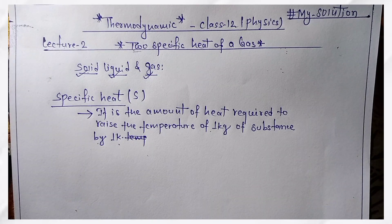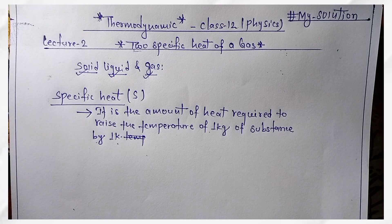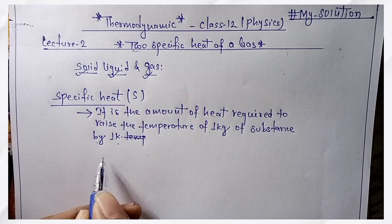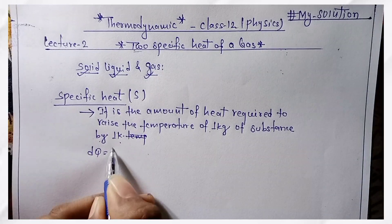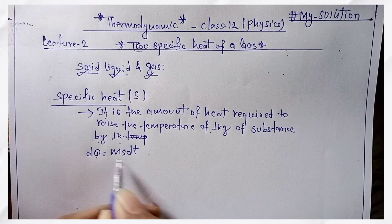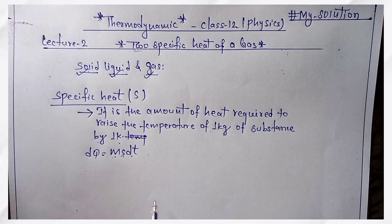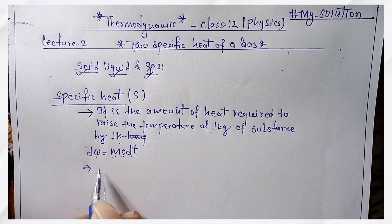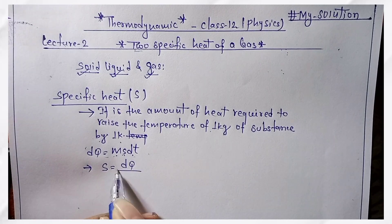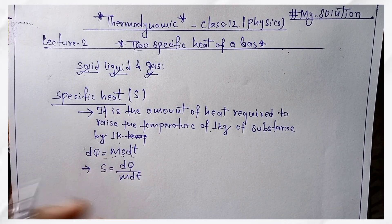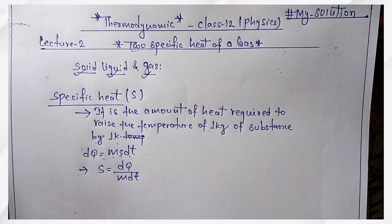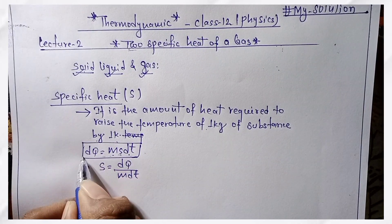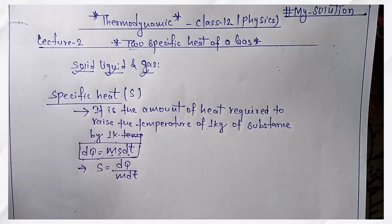In 1 kg of substance, we will increase the temperature by 1 Kelvin. The formula is: DQ equals to M S DT. So specific heat S equals to DQ divided by M DT. This is the specific heat formula.